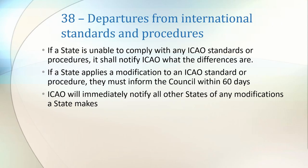Article 38 covers the required actions if a state is unable to comply with one or more ICAO standards. Any state that can't comply with an ICAO standard or procedure shall notify the Council within 60 days of the discrepancy commencing. ICAO will then immediately notify all other states of the nature of the discrepancy.